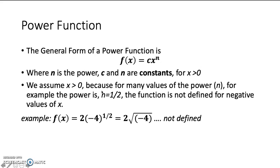It is assumed greater than 0 because for any values of the power n, for example, we have n equals to half, 1 over 2, the function is not defined for negative values of x. Here we have an example, 2 with the base here minus 4, power 1 over 2. And we can rewrite it as the square root of minus 4 times 2. And the square root of a negative value is not defined. We also exclude x equals to 0 because 0 to a power of any value is also not defined.